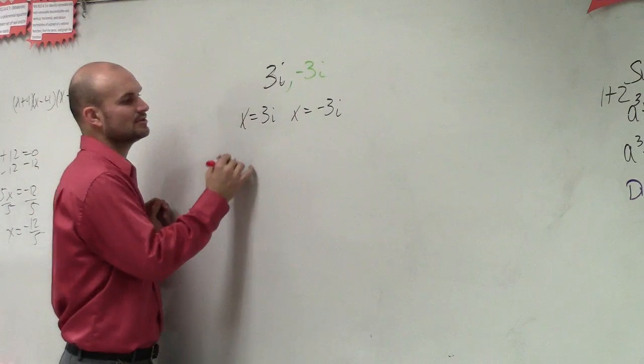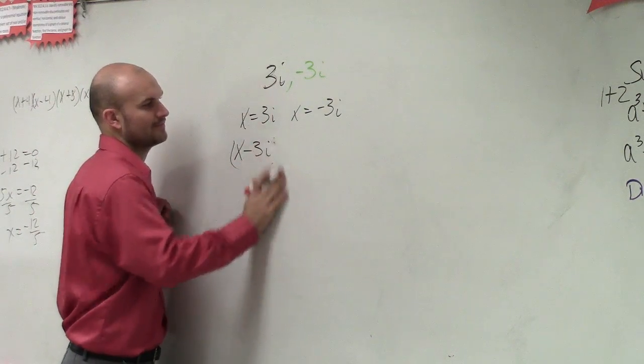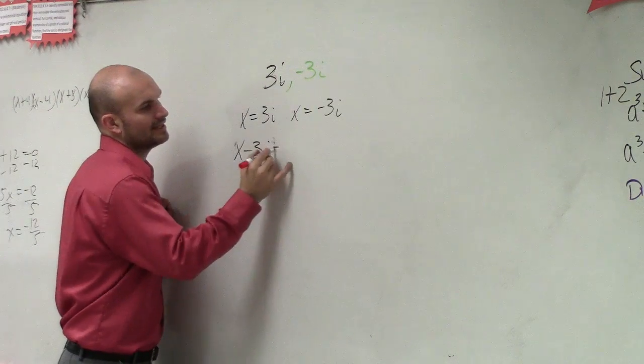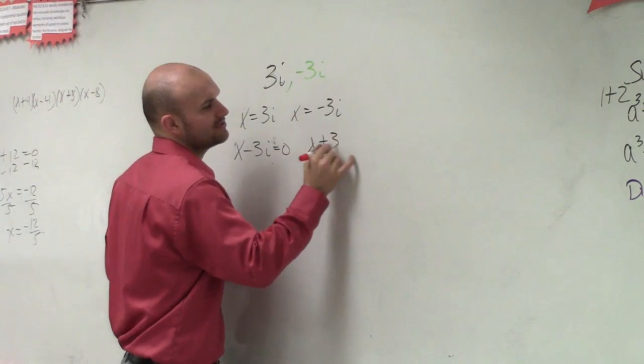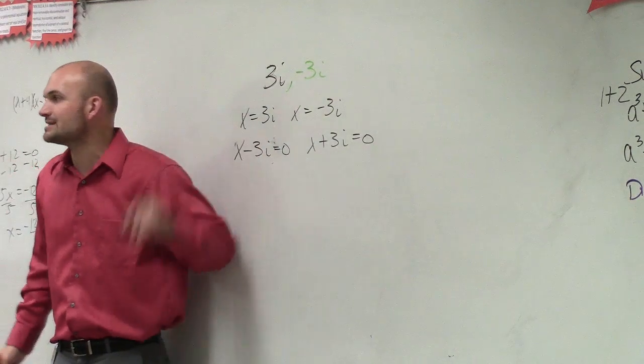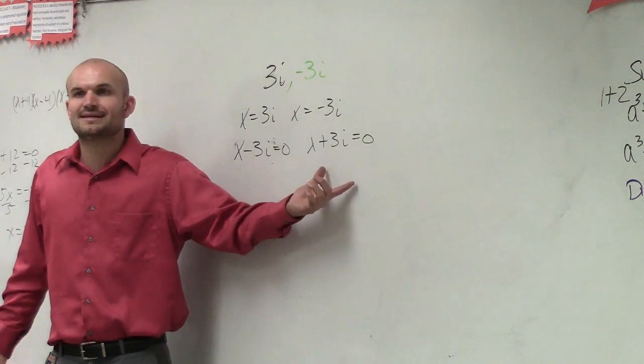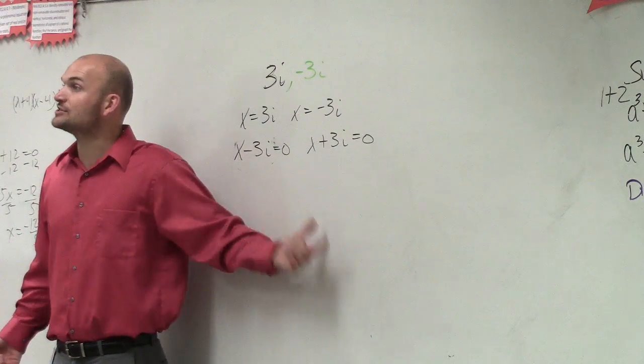So we can now set these equal to zero, so it's x minus 3i, how am I doing that? I don't know. Equals zero, and x plus 3i equals zero. So what I did is I put these on the same side and said they equaled zero. And why did we get to this point? Because remember, we got to here by applying the zero product property.